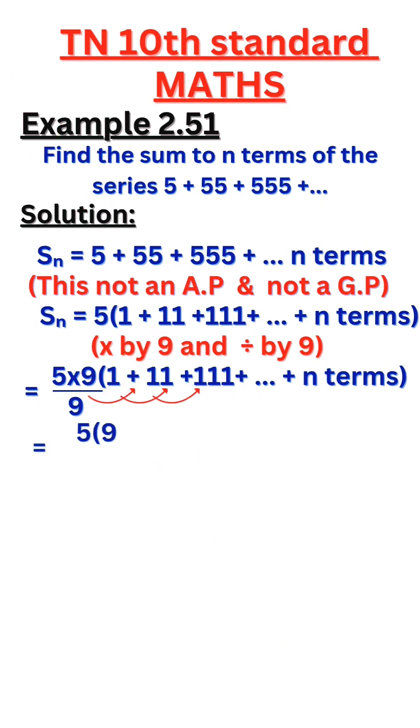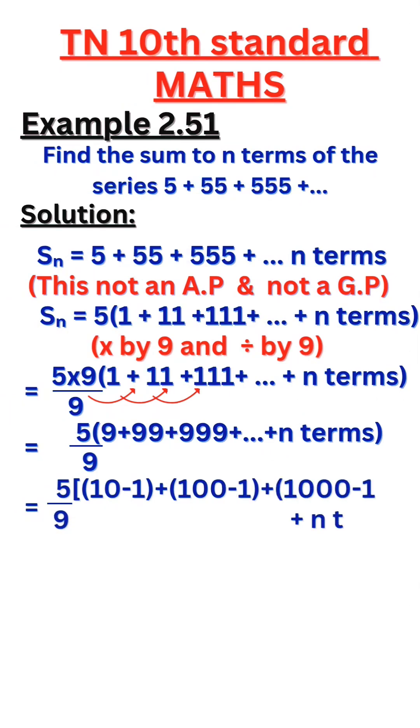We multiply the bracket terms into numerator 9. We get 5 by 9 into 9 plus 99 plus 999 plus dot dot dot plus n terms. We write as 9 to 10 minus 1, 99 to 100 minus 1, 999 to 1000 minus 1.